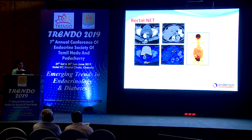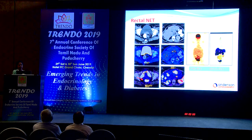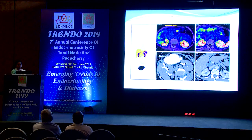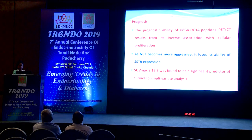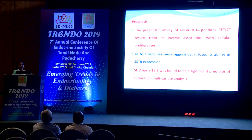In a case of rectal NET, the FDG image showed no appreciable uptake in liver lesions or the primary, but the DOTA PET image for the same patient clearly showed multiple liver lesions and uptake in the rectal lesion. In another case of duodenal malignancy, the duodenal lesion showed no uptake on DOTA-NOC PET-CT; biopsy confirmed poorly differentiated carcinoma. This demonstrates how DOTA PET-CT can be used for prognostication.